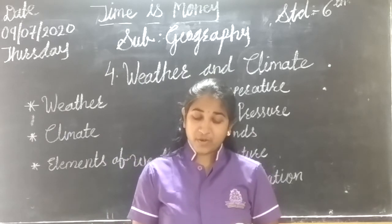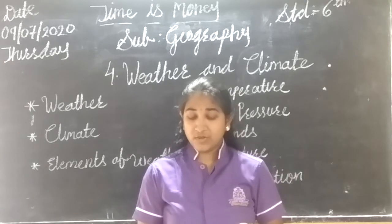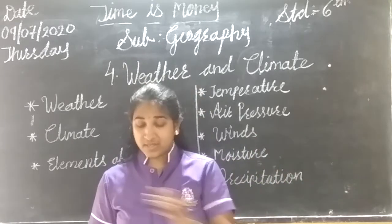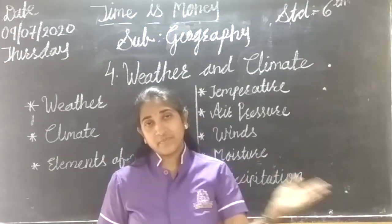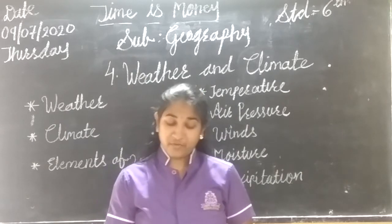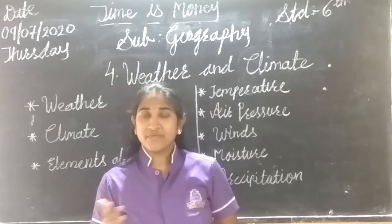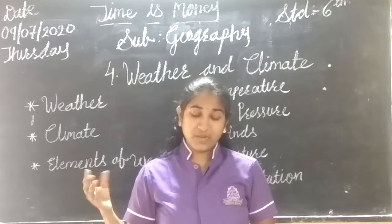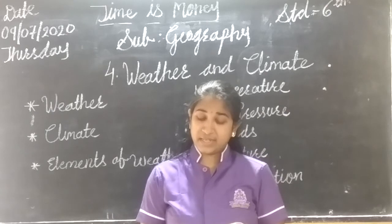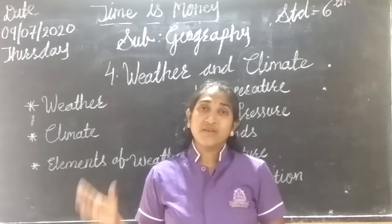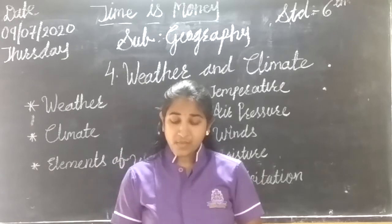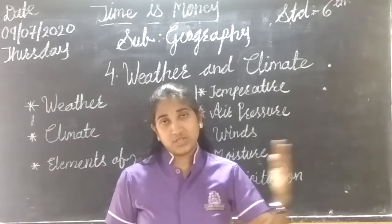Winds. Air starts moving from high pressure towards the low pressure area in a horizontal direction. Air moves from the high pressure region to the low pressure region. This moving air is called wind. When we say the wind is coming and it is very cool - that means the moving air is called wind. Wind flows from high to low pressure areas and its speed depends on the amount of difference in air pressure. It always flows from high pressure to low pressure region.